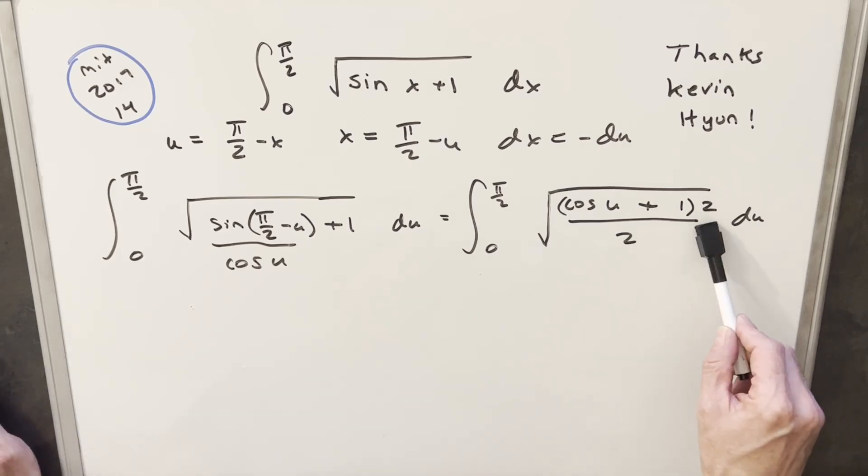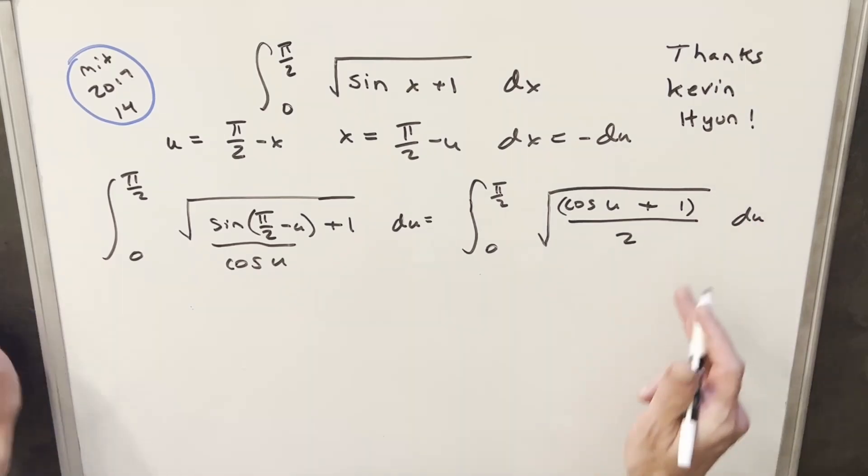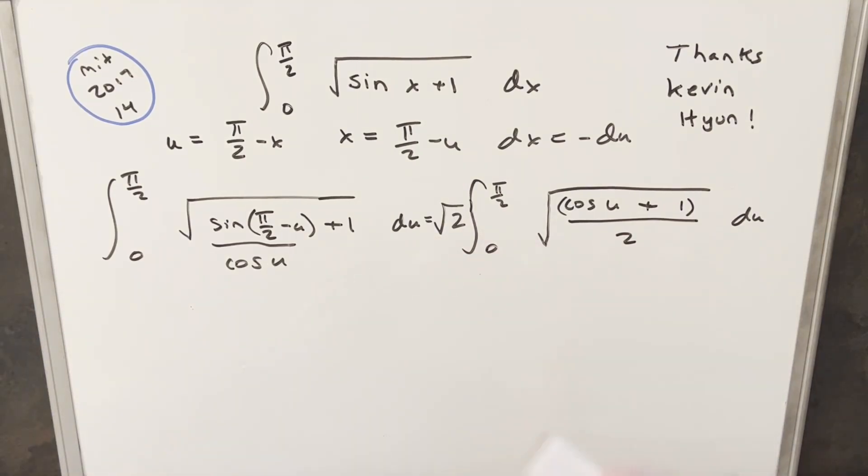But then what I can do with this 2 here, it's inside the square root. I'm just going to take that out as a constant value. So I'll just take that out front and write a square root of 2 outside the integral. And then what you may notice, what we have right here, this is actually very similar to our half angle formula for cosine.